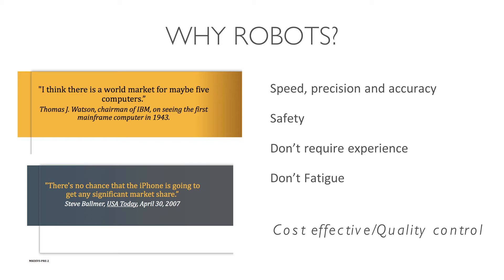So why robots? It's really interesting to think about the introduction of new technologies — there's always a period of skepticism and slow adoption. In the world of robotics in medicine, we're kind of in that initial introductory phase. In industrial manufacturing, robots have introduced speed, precision, accuracy, and safety. They don't require experience, they don't get fatigued, they're programmed, and they can do a large volume of work in a relatively short period of time. This has introduced cost-effectiveness and quality control in the manufacturing world.